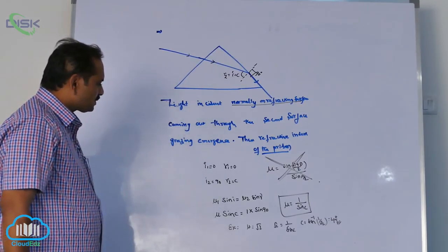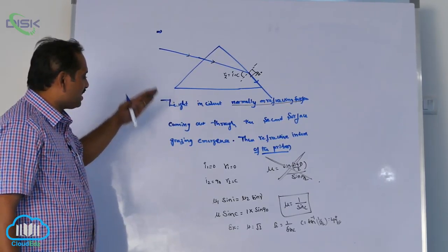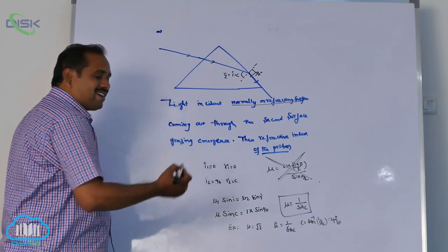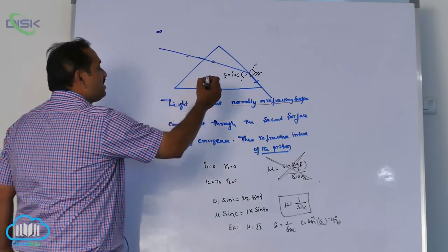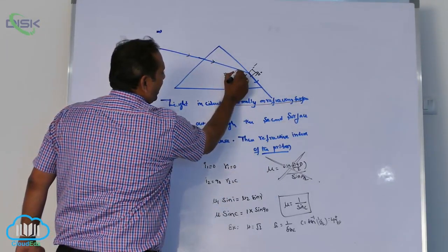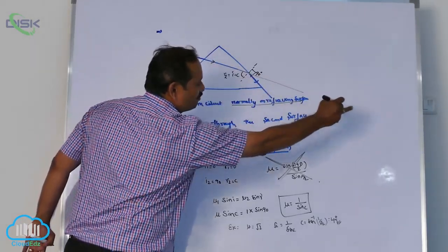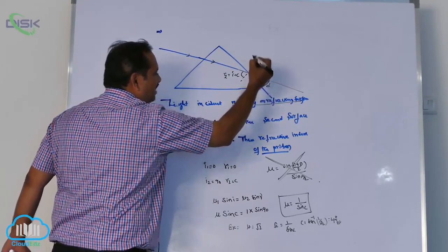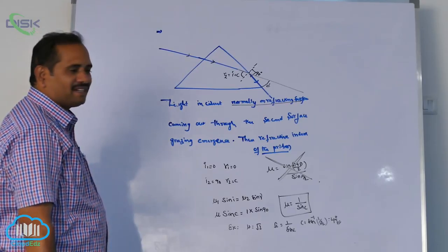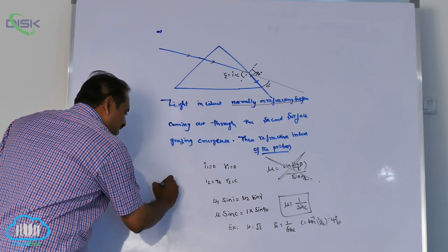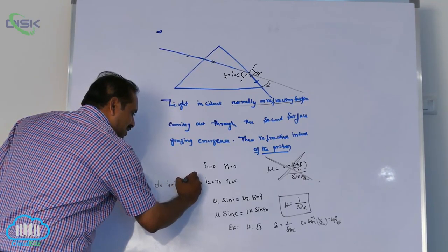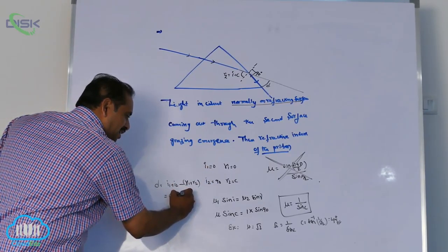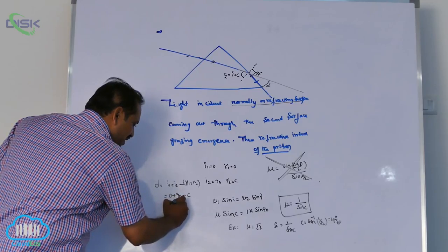And okay sir, this is general way of asking question. Some tricky way of asking questions in the examination paper - what way we can find it? They can ask you like this: what is the deviation of the light? Deviation means what? Angle between the incident light, this is what is the path is incident, and emergent light is like this. This is called angle of deviation. Angle of deviation is this much, and that is deviation equal to i1 plus i2 minus r1 plus r2, a side. That is i1 equal to 0, i2 90, minus r1 0, r2 c. What is your answer sir? 90 minus c.